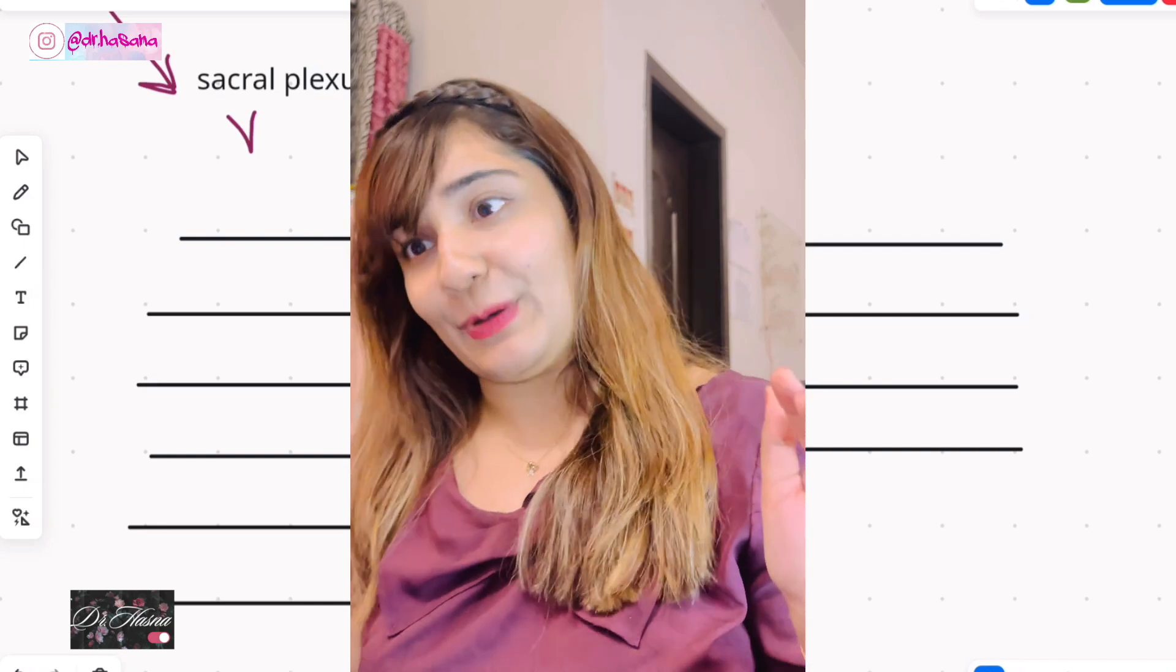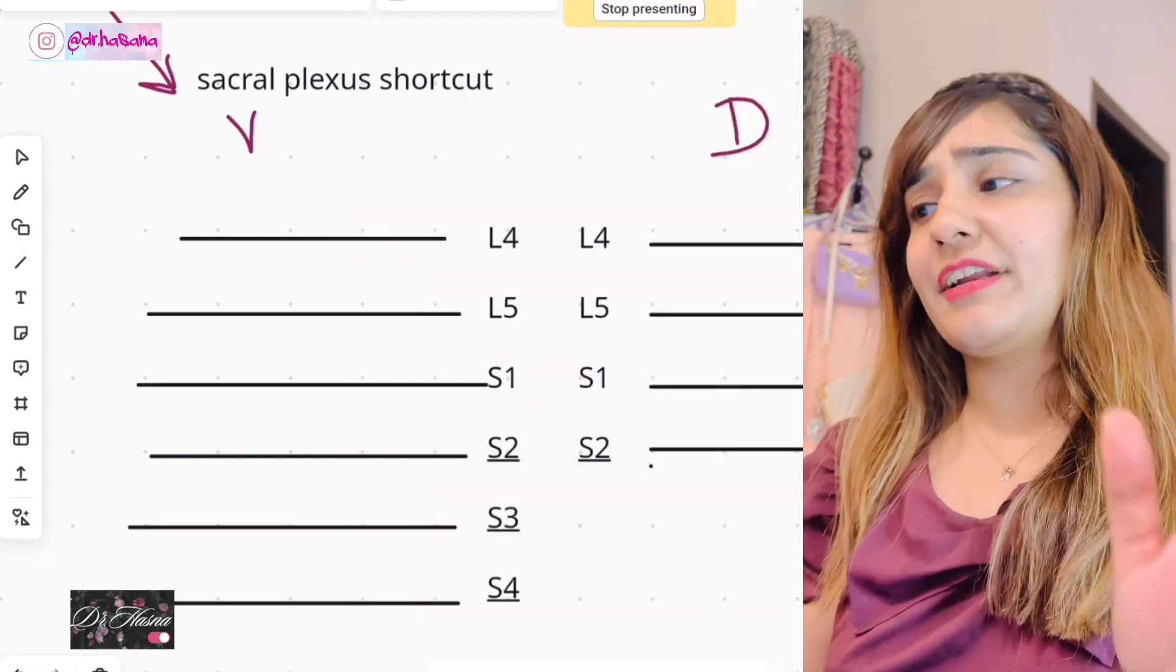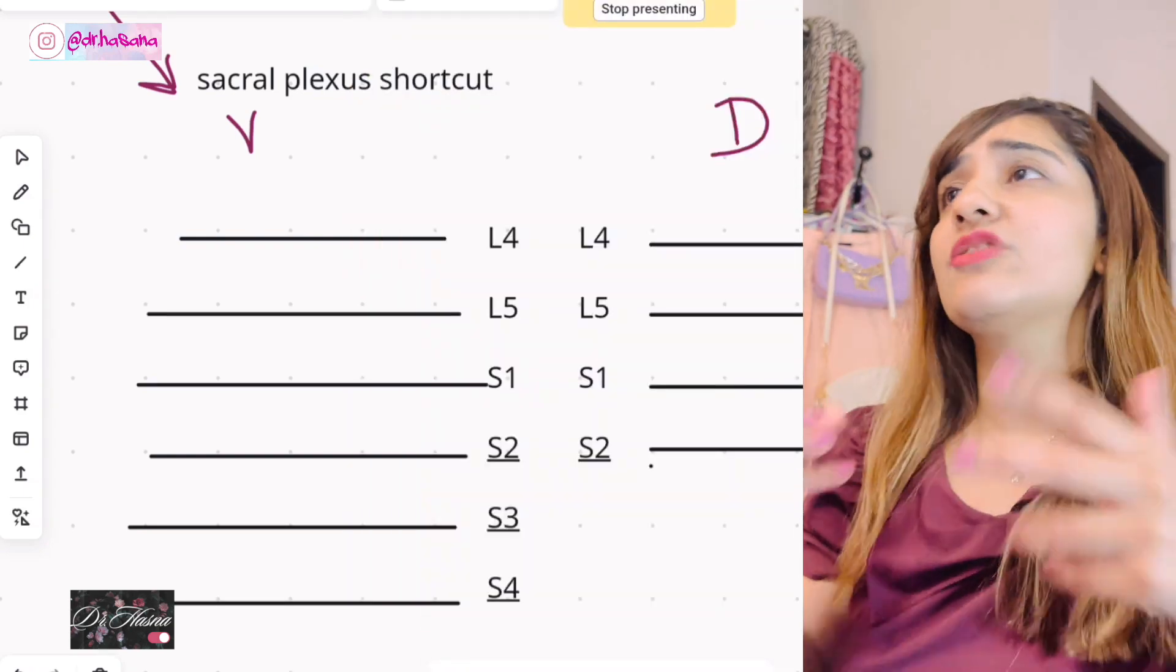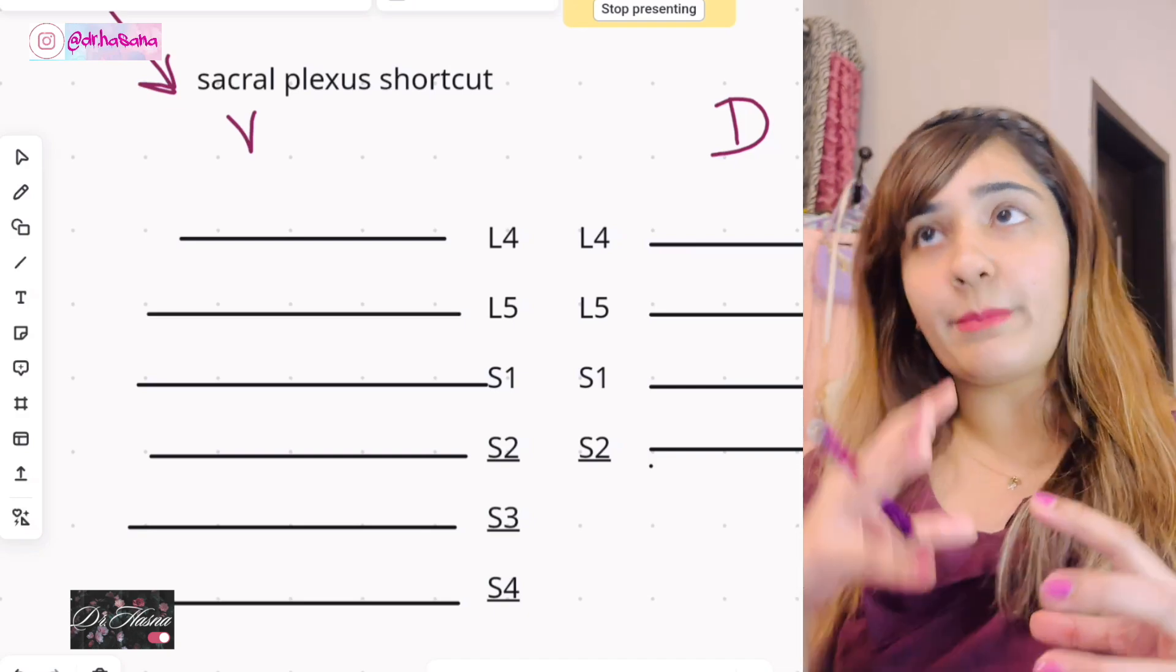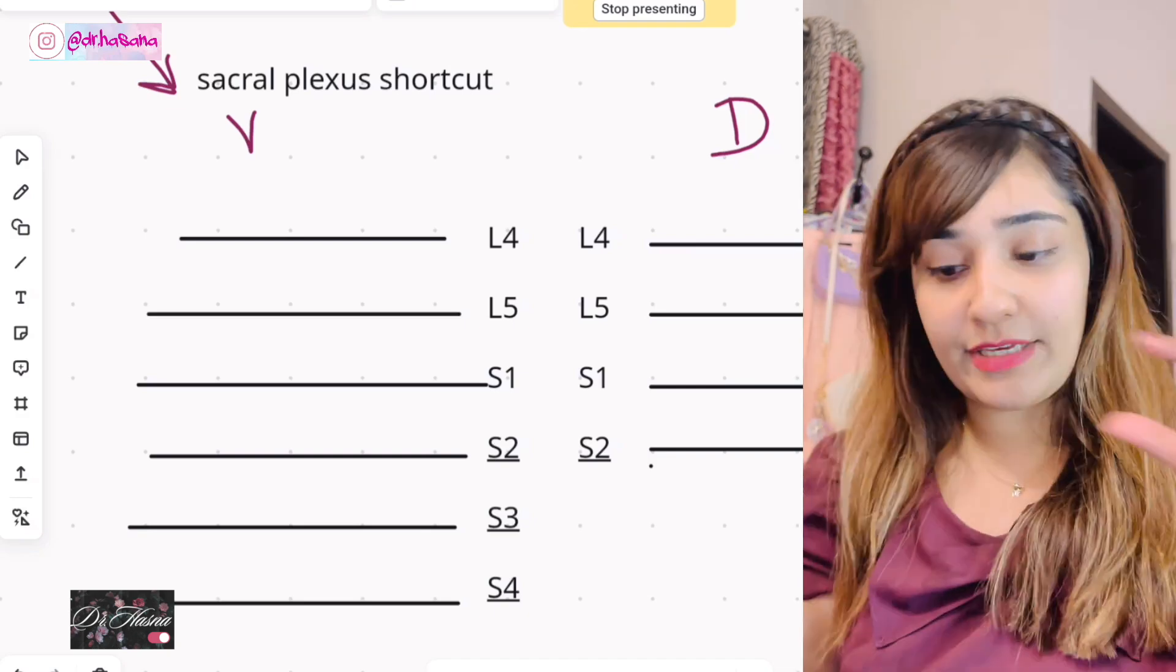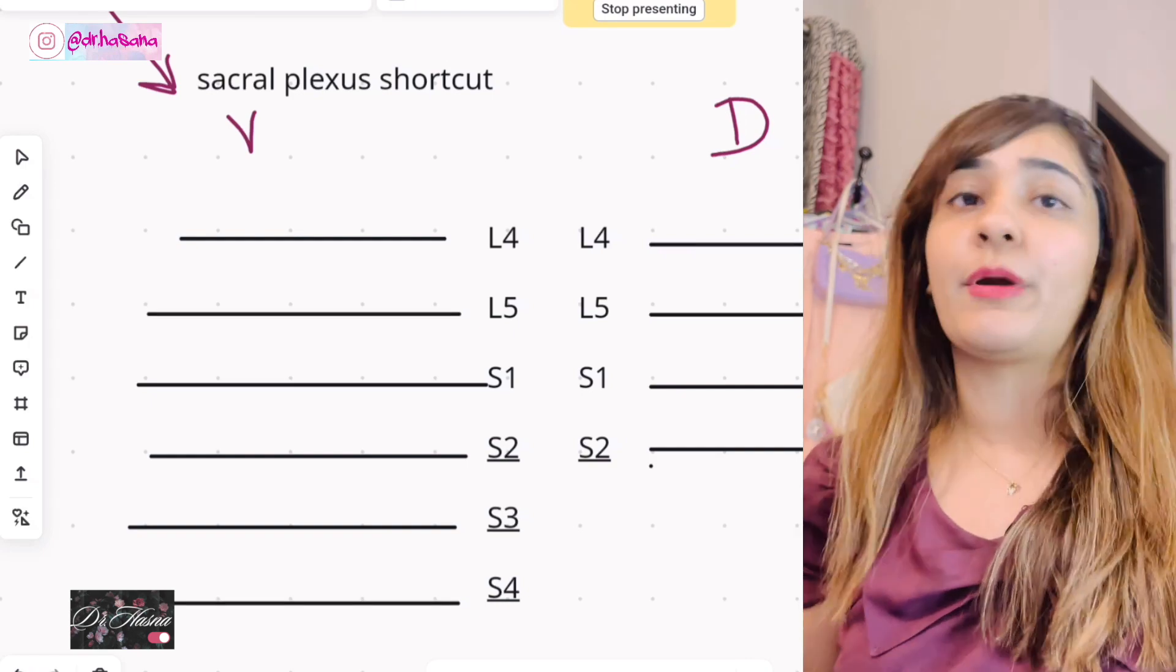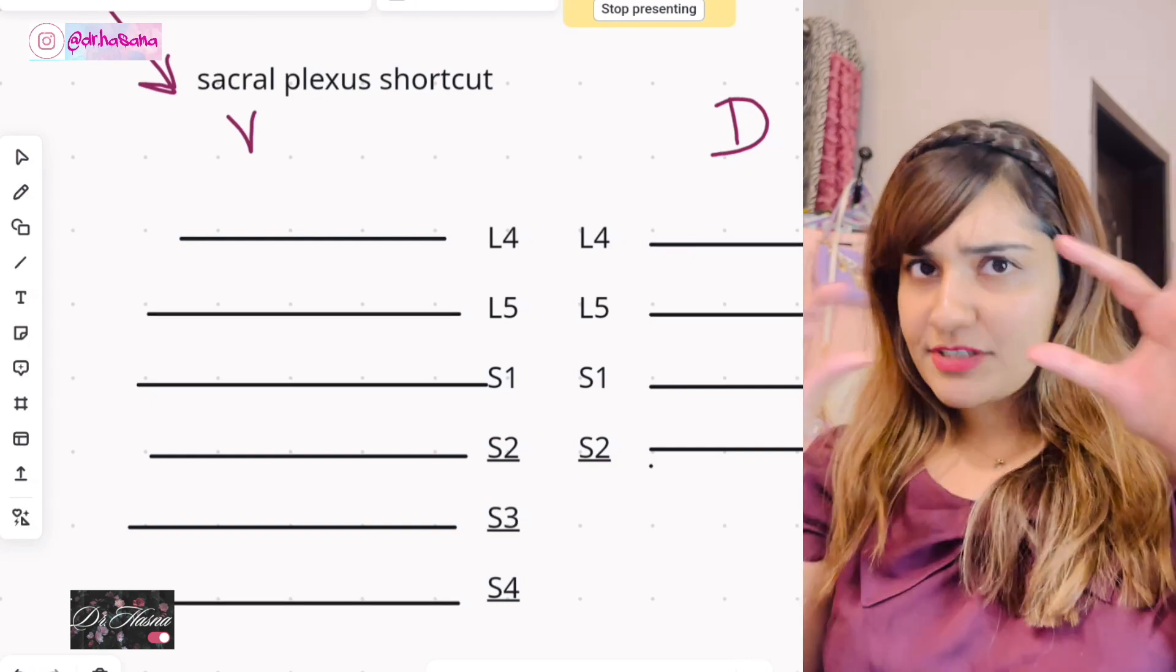So stay tuned if you want to understand this lame terrain topic because yeah it is kind of lame. Okay let's get started guys, so first what I want you to do is understand what sacral plexus is. Plexus is a bundle of nerves coming from the spinal cord.